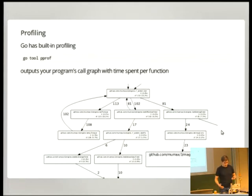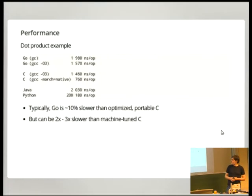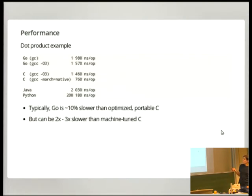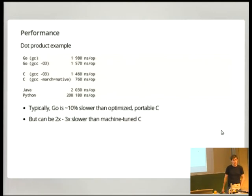How about really bare performance? Going back to the dot product example, I've compared it to the exact same code in other languages. The native Go compiler also has GCC support, and it's actually pretty close to portable C code. Typically you'll sacrifice around 10% performance, for which you get array bounds checking, garbage collection, and so on.